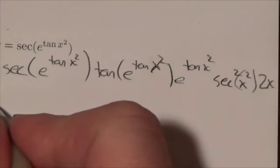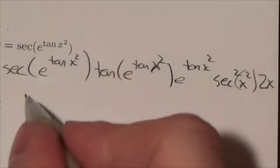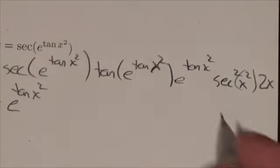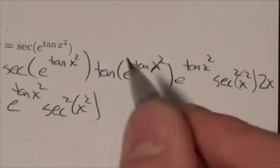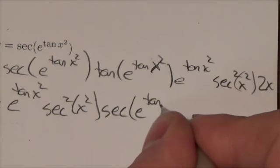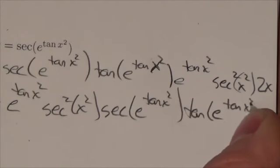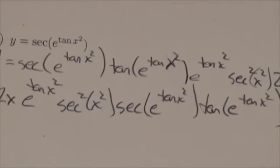You'd very likely want to pull the 2x out front, okay, follow that by the e to the tangent of x squared, then have the secant squared of x squared, followed finally by the secant of e to the tangent of x squared times the tangent of e to the tangent of x squared. That is probably just a little cleaner.